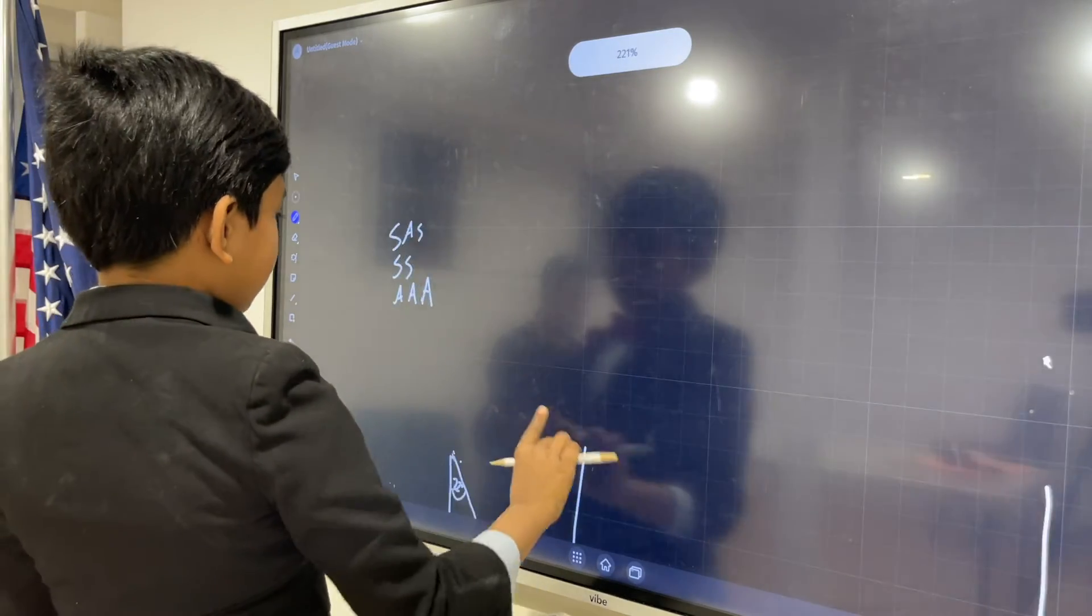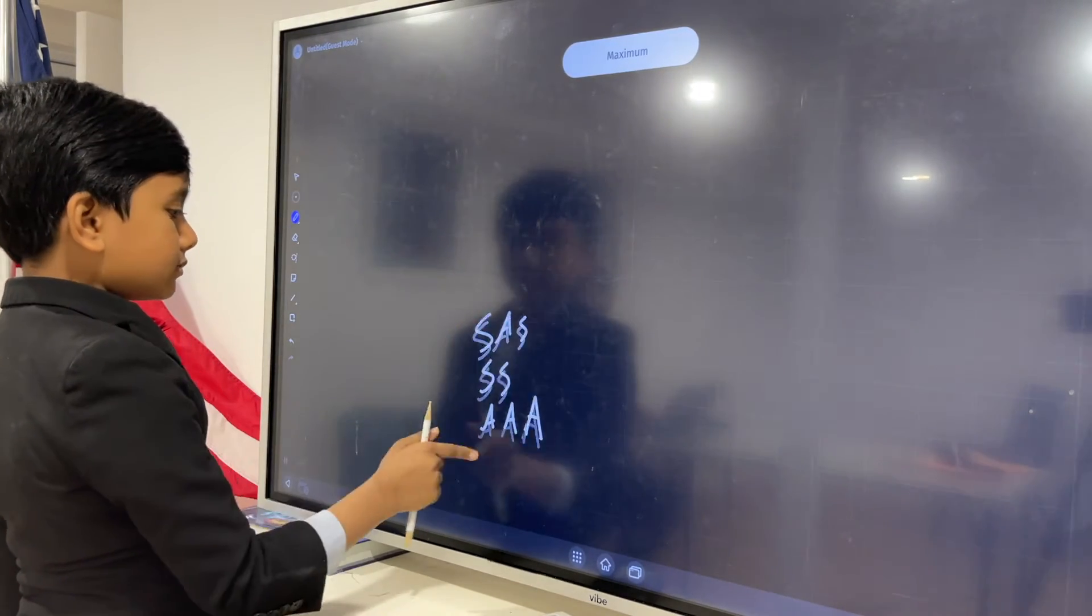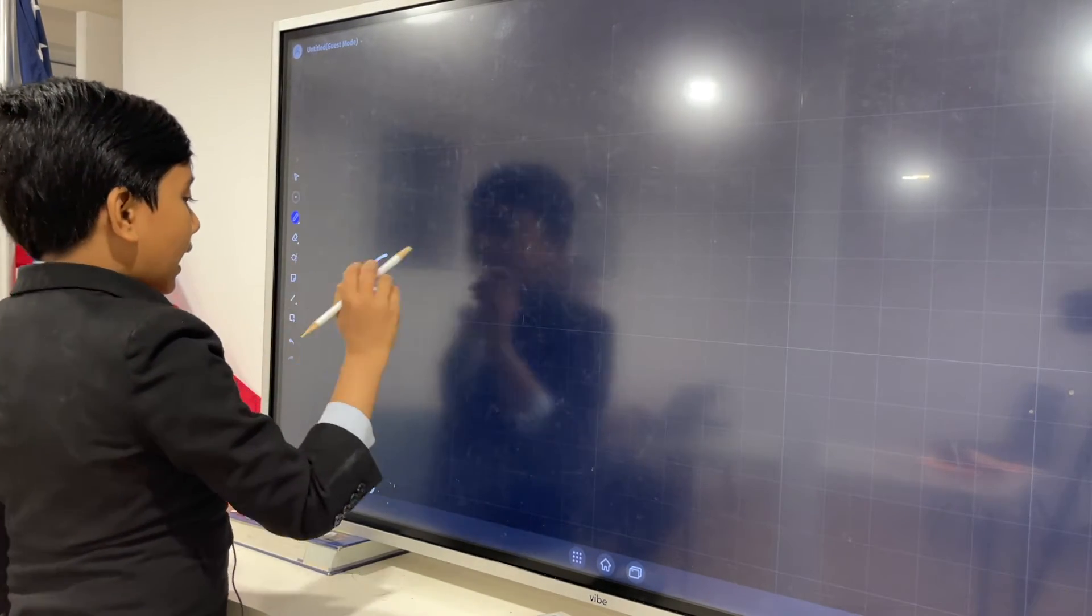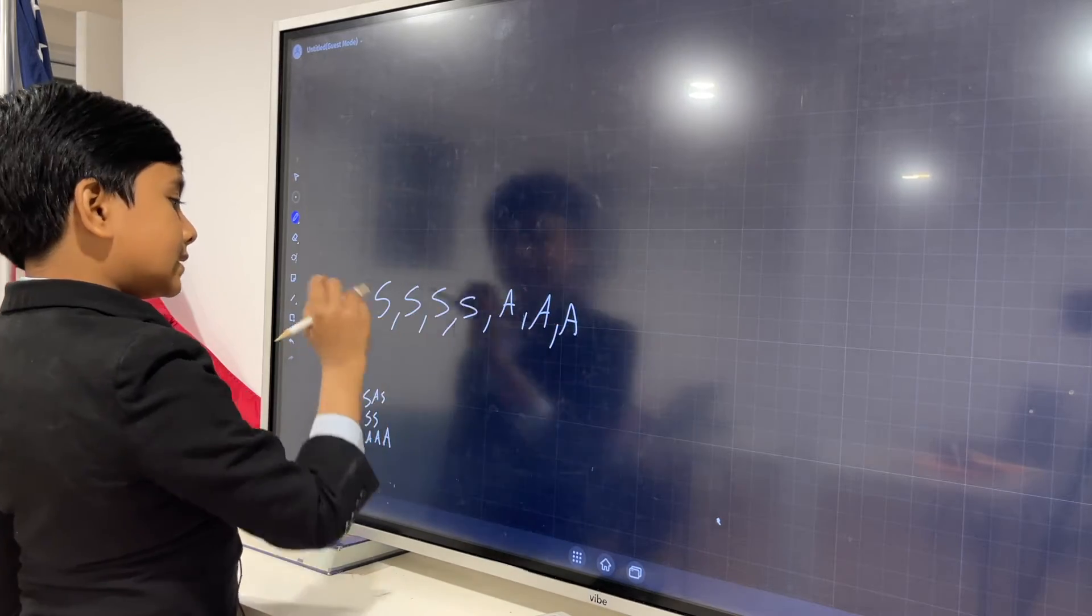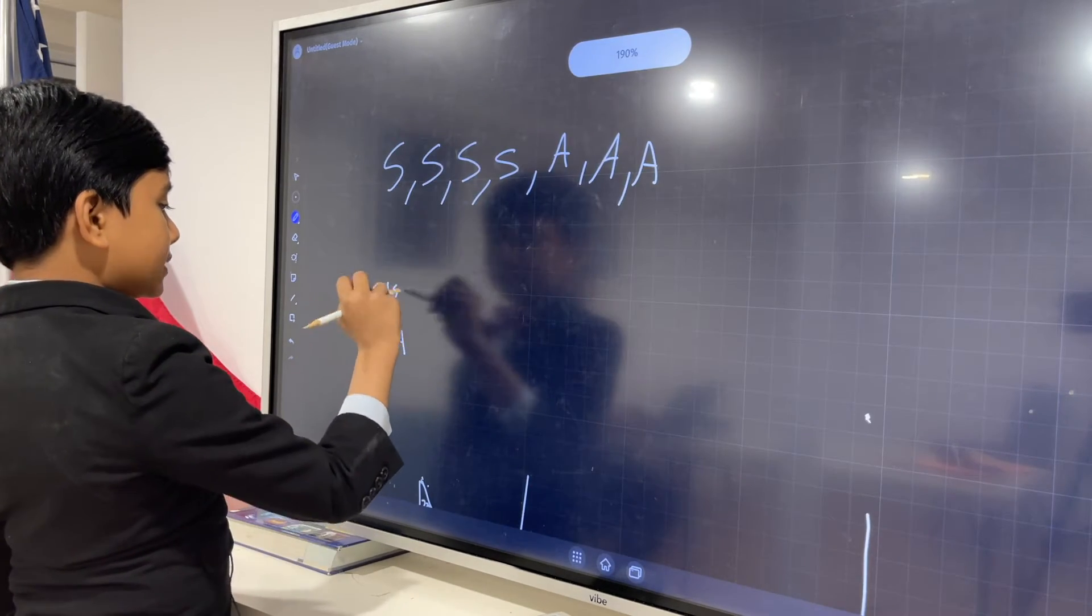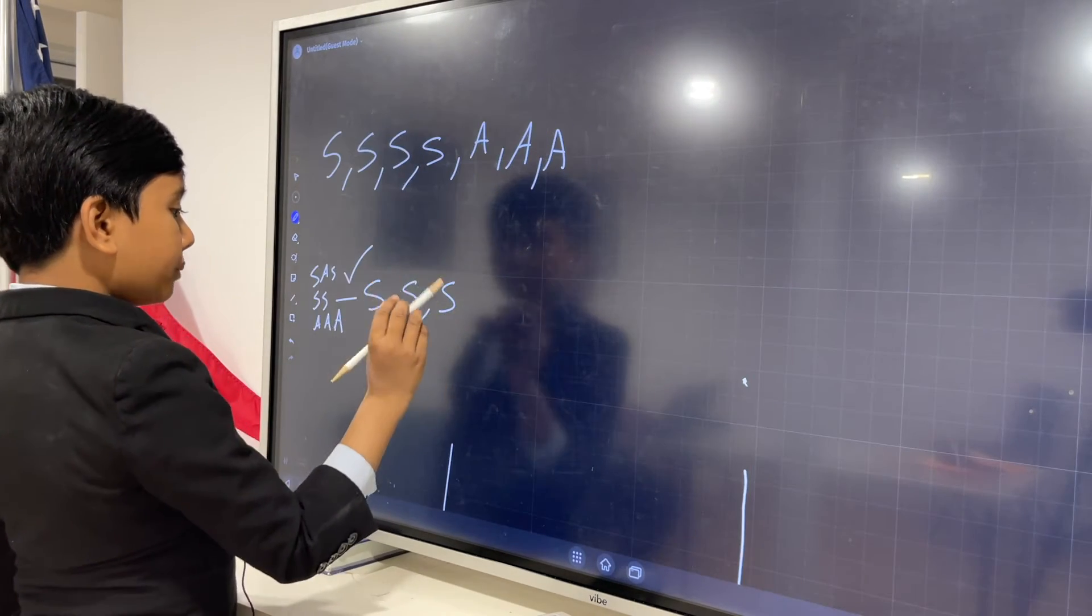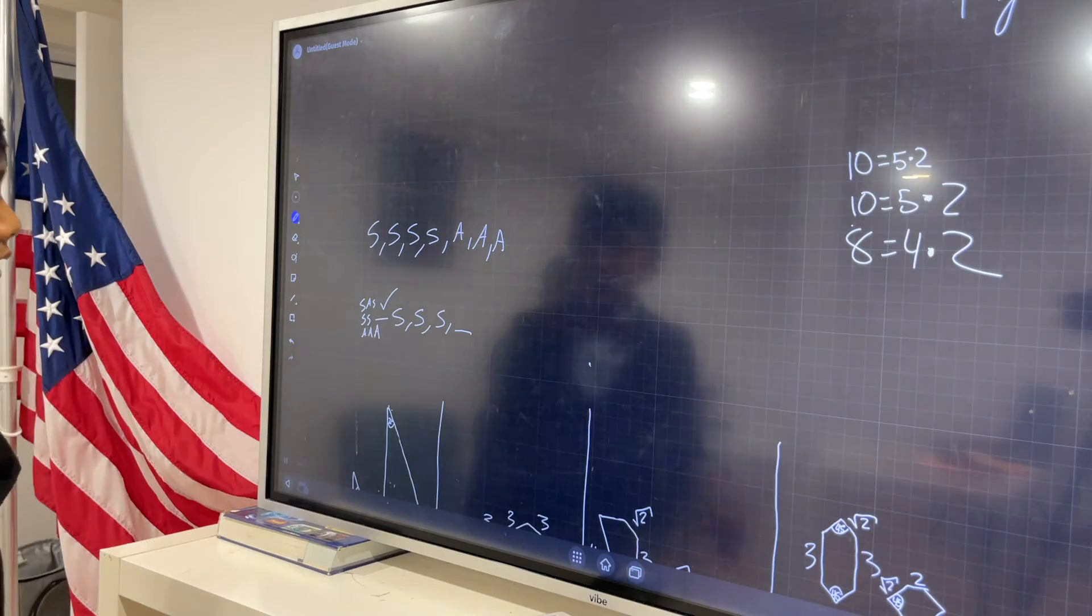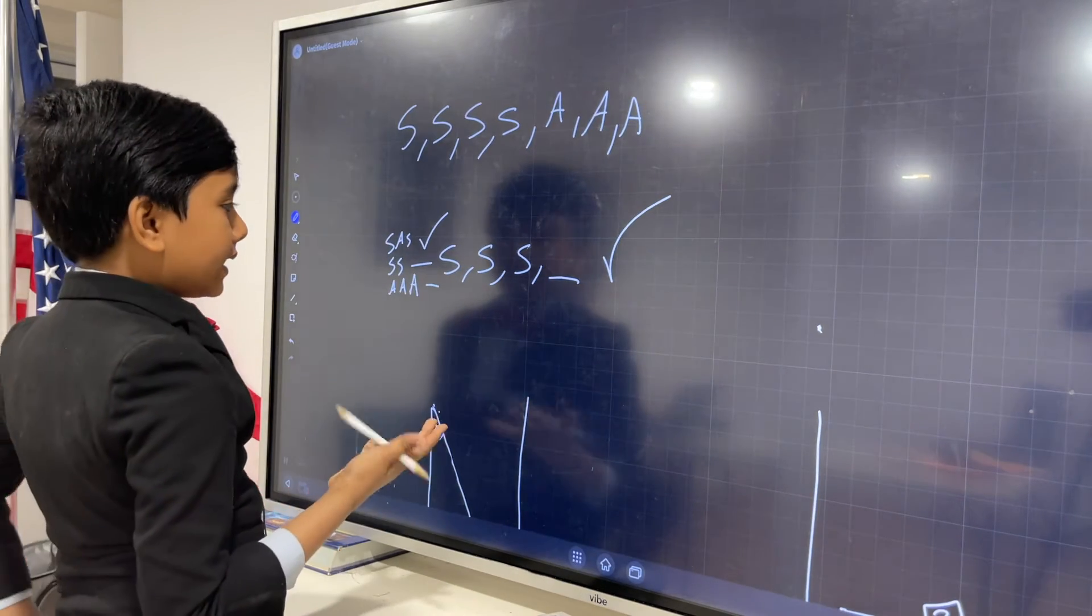Now what are the three strategies we can use for finding out congruency? Well there's SAS, which basically stands for side-angle-side. And what that means is you take any number of sides and the angles that come with it. Now if those two are proportional between the triangles, then the triangles must be similar.